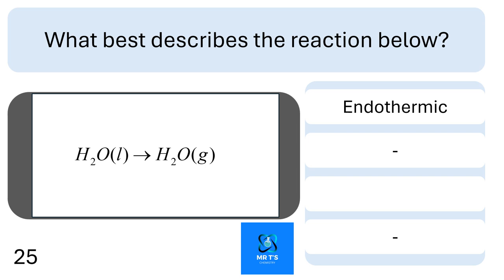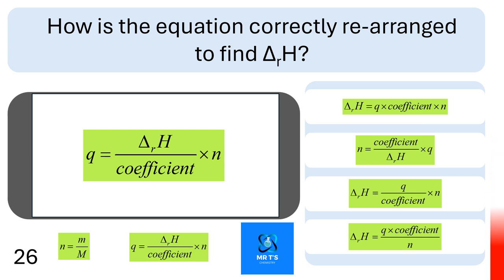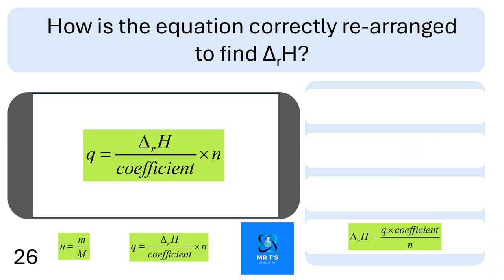Question twenty-six: which of the options on the right is the correct rearrangement of the expression to find ΔHr, the change in enthalpy for the reaction? If you guessed that the last one was the correct arrangement, then you were correct.